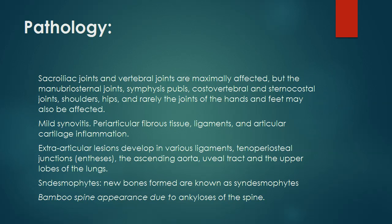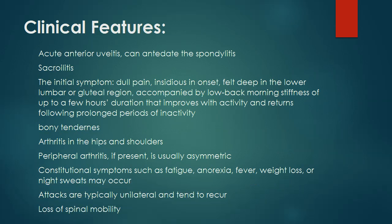Ankylosis develops in the joints on account of the tendency for calcification and ossification. The new bones formed are known as syndesmophytes, which form the characteristic feature of the disease. Calcification and ossification of the annulus fibrosis and proliferative bony outgrowths from the vertebral borders result in ankylosis of the spine. The spinal column becomes a rigid pillar, giving the radiological appearance of bamboo spine. Acute anterior uveitis can antedate the spondylitis.